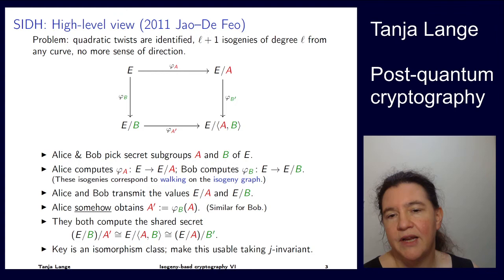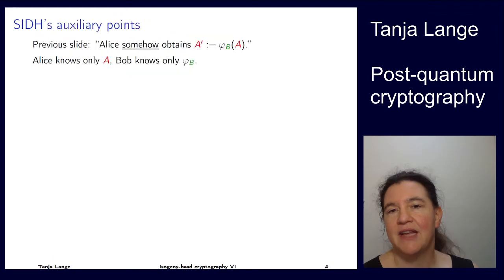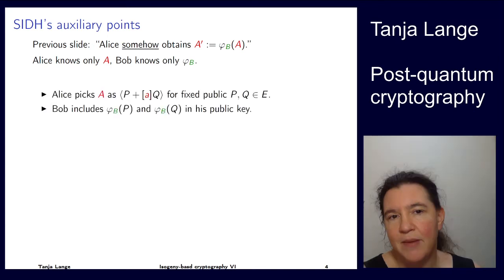How do we deal with this? How can we get Alice to have this A prime? Alice knows her A, but this is also her whole secret. Knowing A, she can compute phi sub A, so this is the one secret that Alice has. And Bob has the isogeny, but that's also his secret. So how can they possibly get together? This was a smart idea in the Jao and De Feo paper.